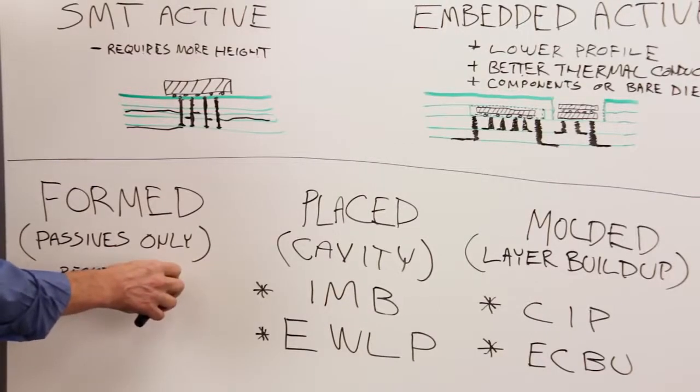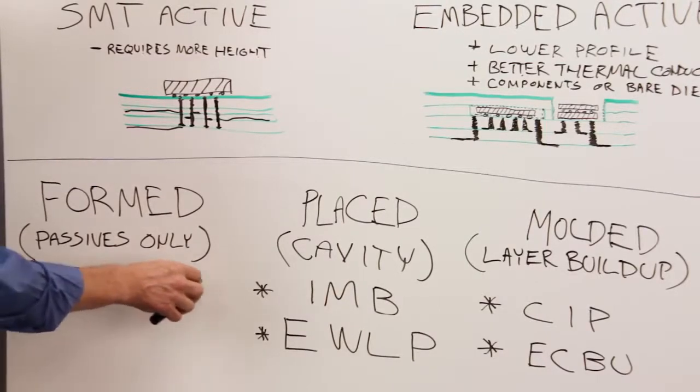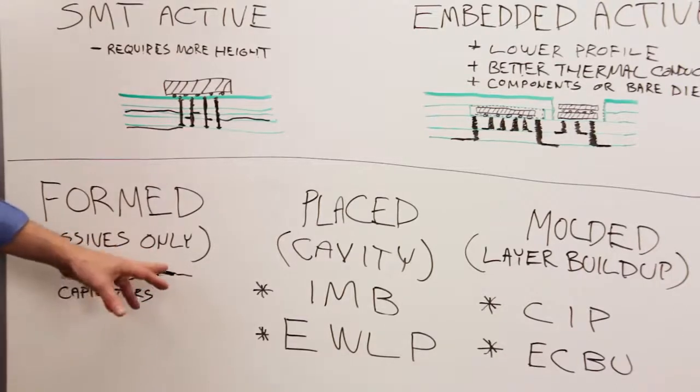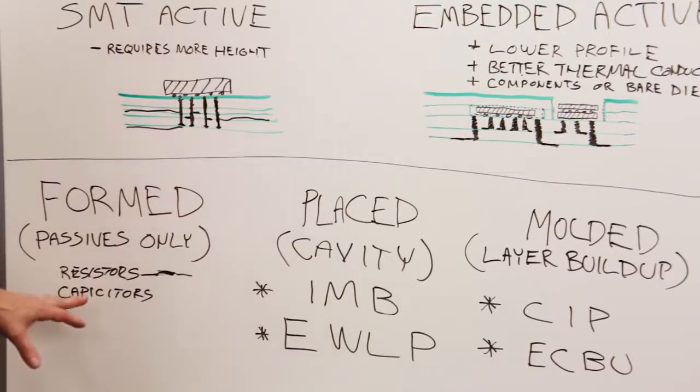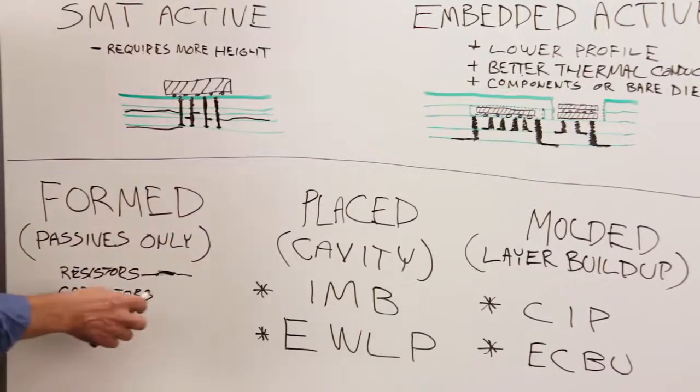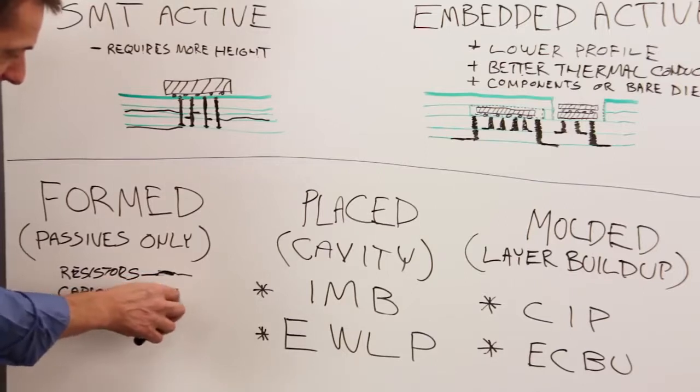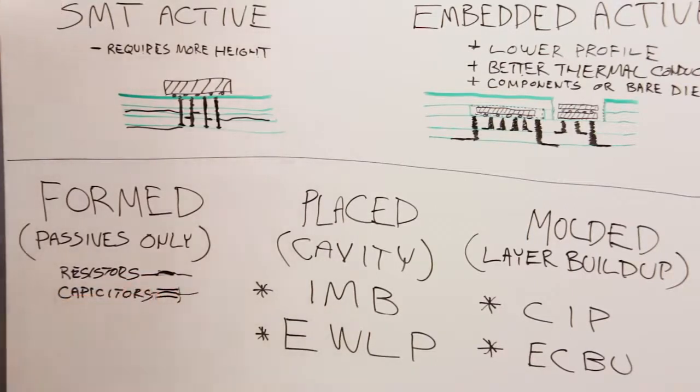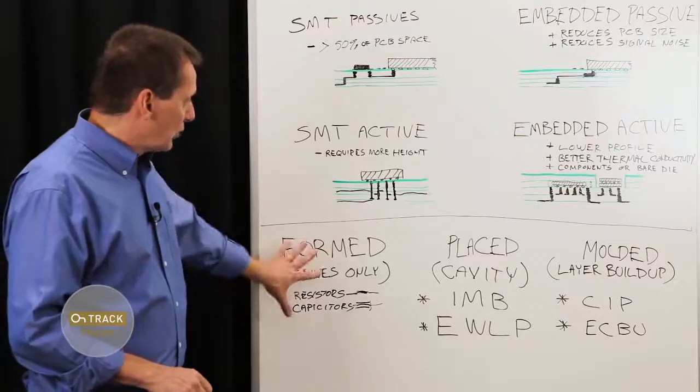The way it works is that a resistive film is used when creating the layers, and that film connects to the standard copper interconnect. And the film can be tuned using laser drilling to have a very high precision, so about one percent or greater. Likewise for capacitors, but slightly different technique. Some metal plates can be implemented within the layering to form capacitors of desired values and then tuned to a desired precision. So that's formed.